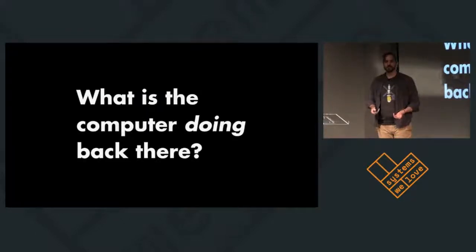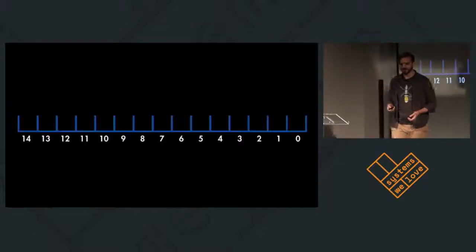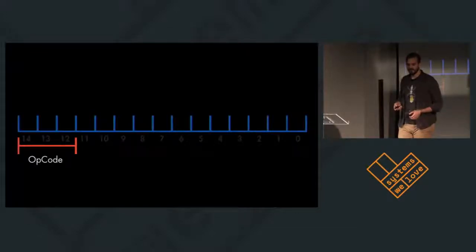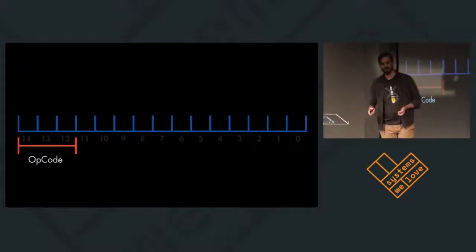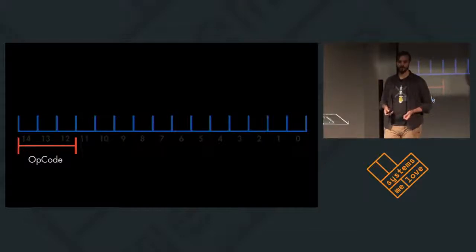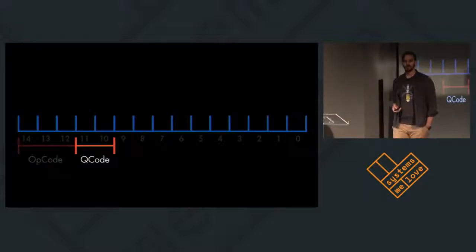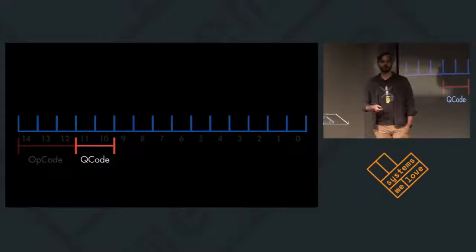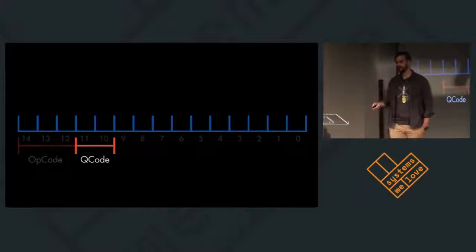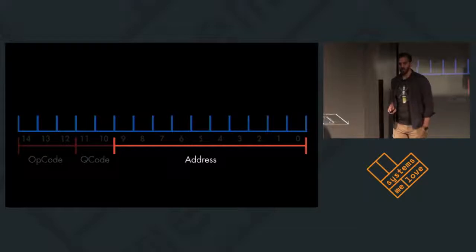So what is the computer actually doing back there? This is a word in the AGC. I've dropped off the parity bit because it's not interesting. The first three bits, or the last three bits depending on how you want to look at things, are the opcode. And if you're doing math in your head, that's not many opcodes. You are correct. In certain cases, you can use the next two bits as a quarter code to extend the number of instructions available to you if you don't need to address too much memory. The remaining bits are the address.